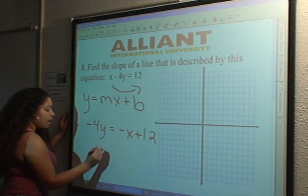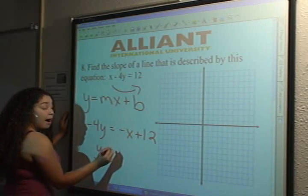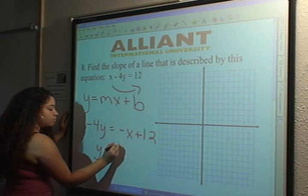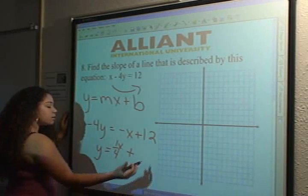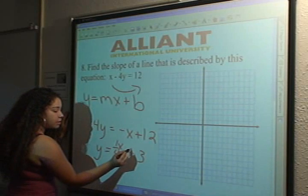So you're left with y is equal to positive, or you can do the one fourth x right here, plus negative 3.